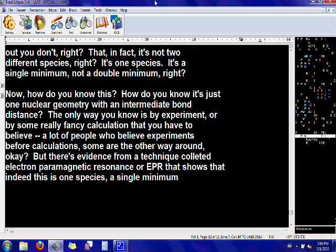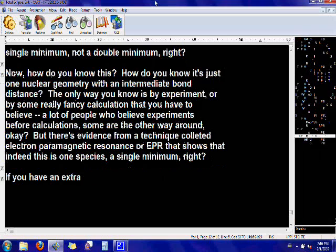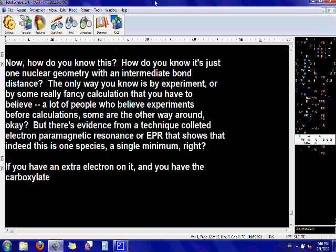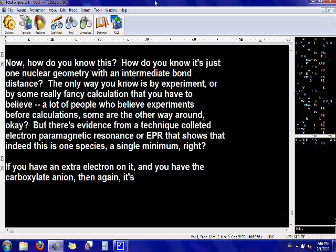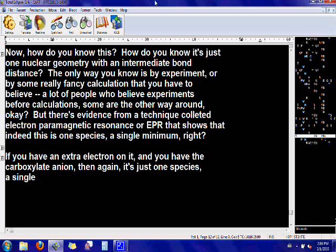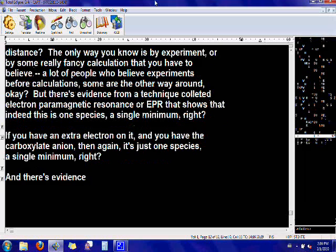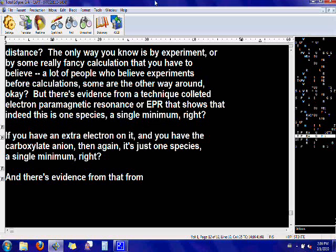If you have an extra electron on it, and you have the carboxylate anion, then again, it's just one species, a single minimum. And there's evidence from that from infrared spectroscopy that we'll talk about next semester.